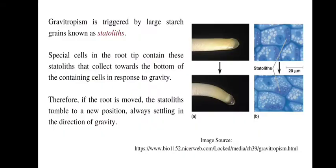Geotropism, along with auxin, is also triggered by large starch grains known as statoliths. Statoliths are starch grains found in special cells of the root cap. These cells contain statoliths that collect towards the bottom of the containing cells in response to gravity. Therefore, if the root is moved, the statoliths settle in the new direction of gravity, directing the growth of roots towards the force of gravity.